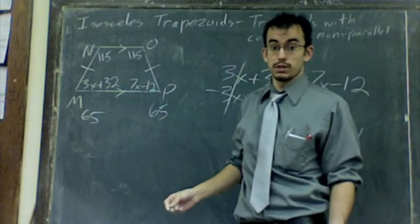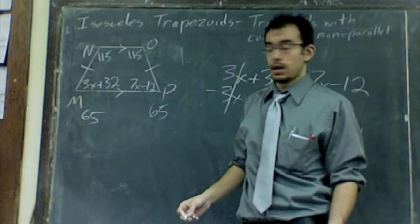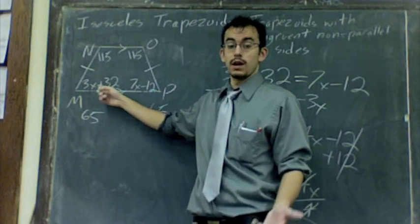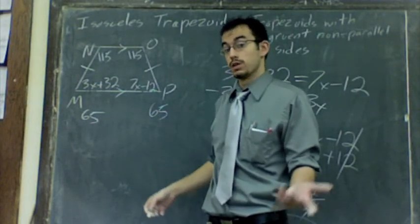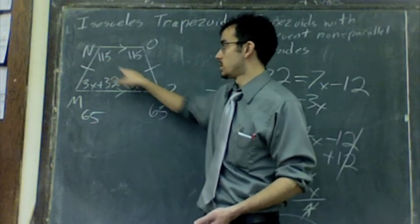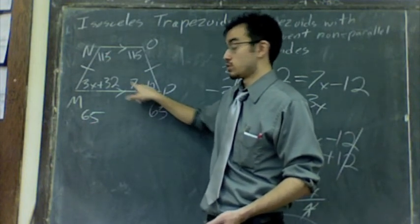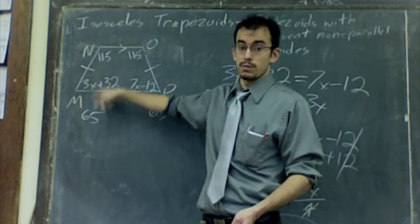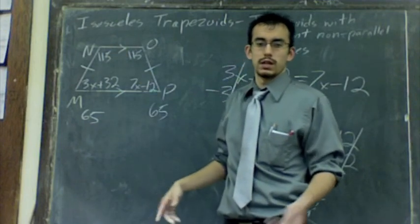That's pretty much all there is to isosceles trapezoids. If you're given the two base angles, set them equal. Otherwise, you have to do what we did in my other video on isosceles trapezoids. For instance, I gave you these two angles. All of this should be the same as this. And these two are supplementary, that is 180. But for more details, watch my other video.